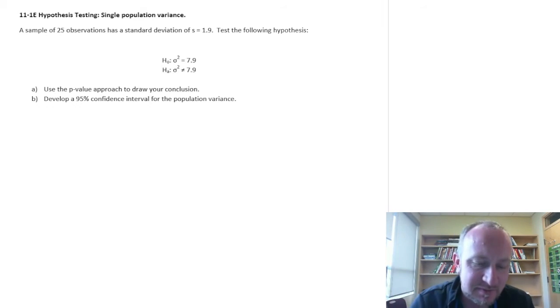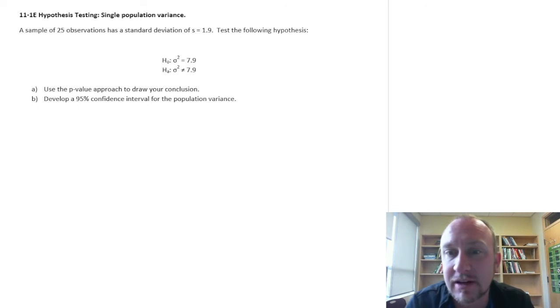So here we've just got some values. You don't have to worry about the context. Let's just run a test. We've got a two-tail test. The hypothesis is given to us. We'll run the test and then we'll develop a 95% confidence interval.